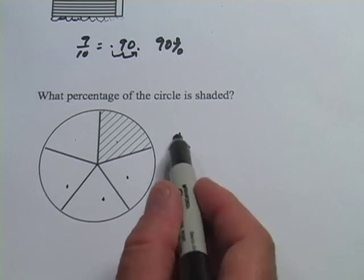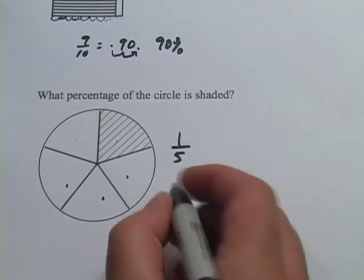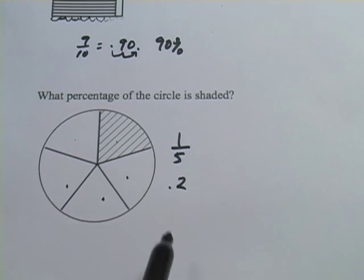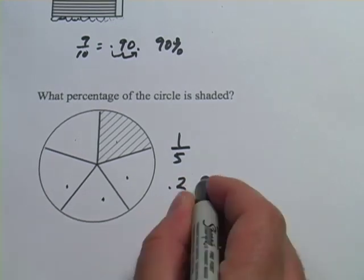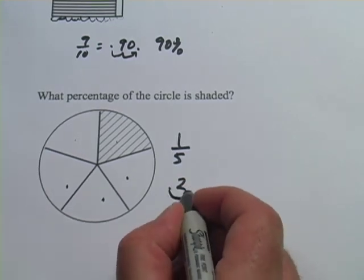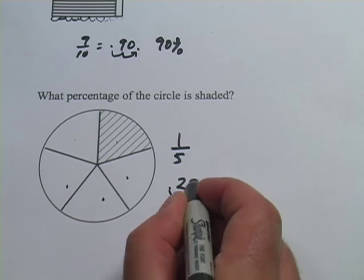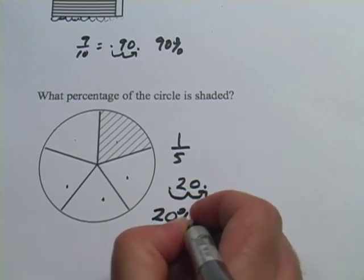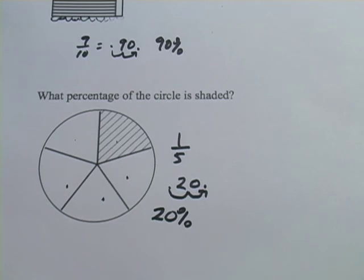And then we have to move, to get this to be a percentage, we move the decimal place over two spots to the right, got to put an extra zero in there, and we get 20%. Let's take a look at that.